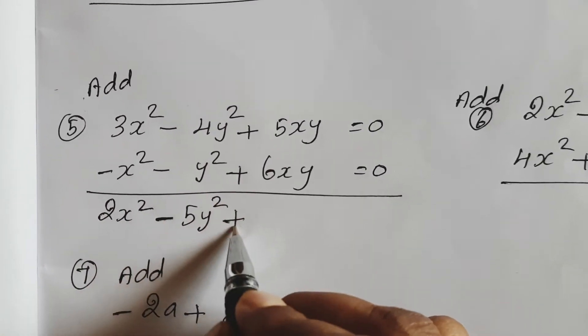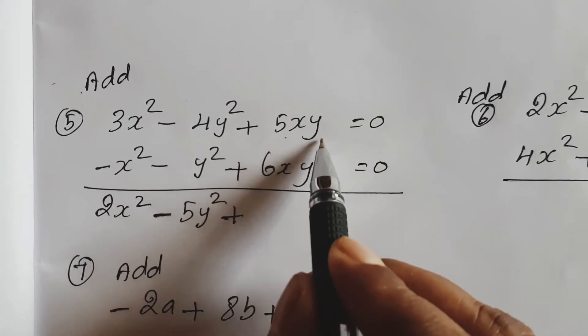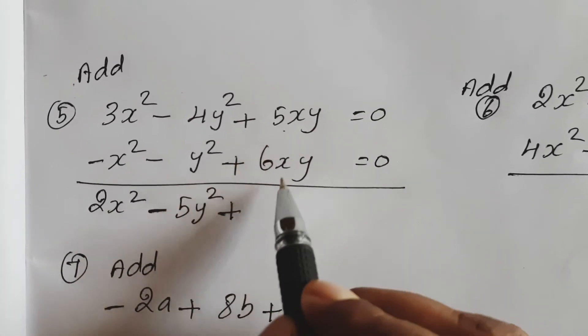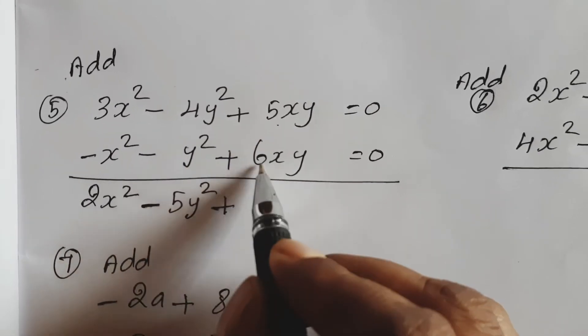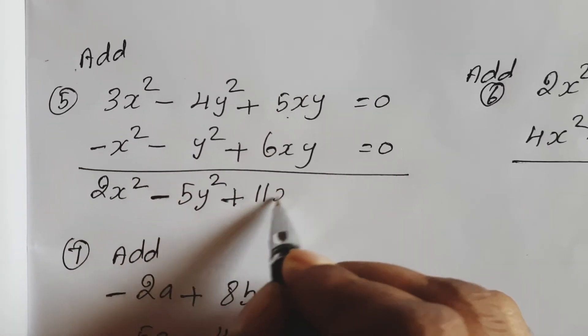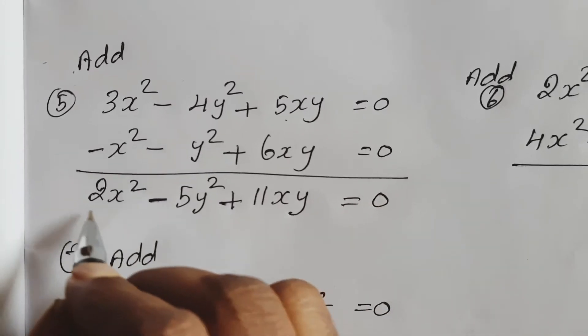Here plus 5xy plus 6xy. Both are same, so 5 plus 6, 11xy. Equal to 0.